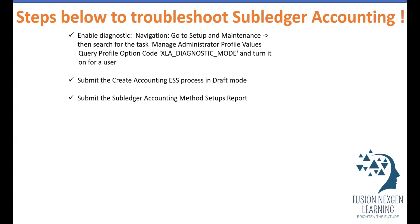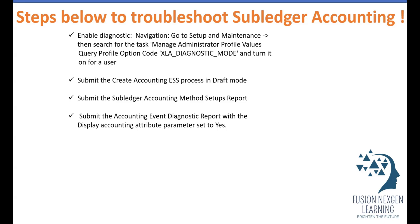Third, after that you have to run the Sub-Ledger Accounting Method Setups report. This report will show you any errors so you can understand what you have configured and easily troubleshoot configuration challenges. Fourth, finally you have to submit the Accounting Event Diagnostic report with the Display Accounting Attribute parameter set to Yes.